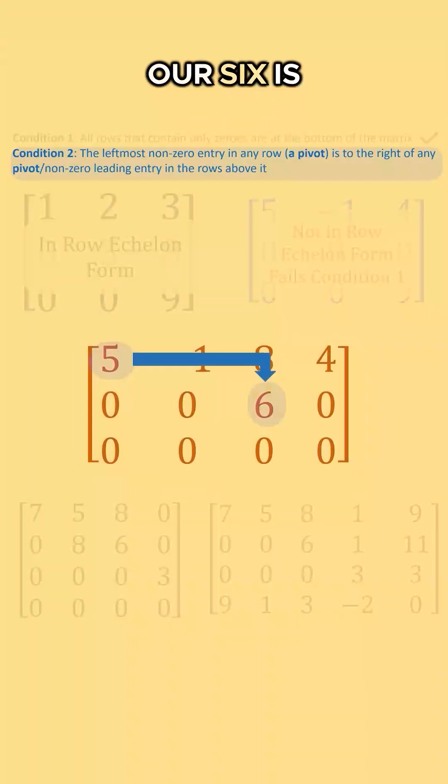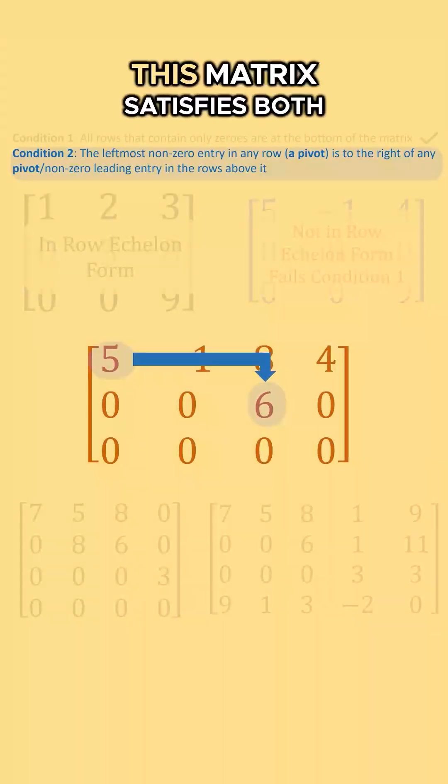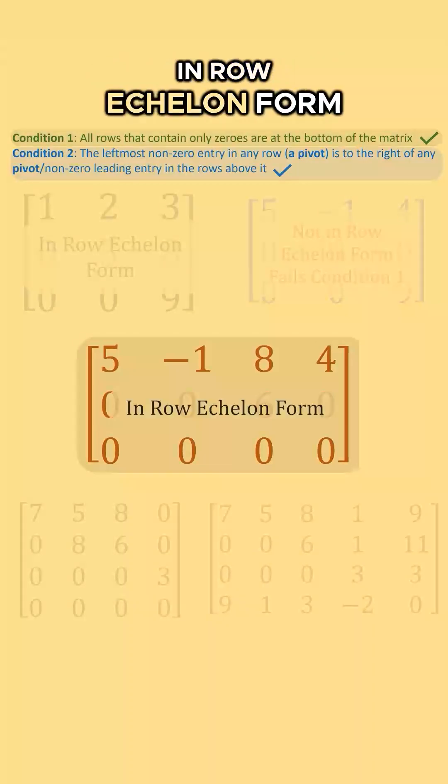In the middle matrix, our six is to the right of five, this matrix satisfies both conditions and is in row echelon form.